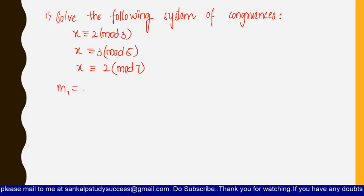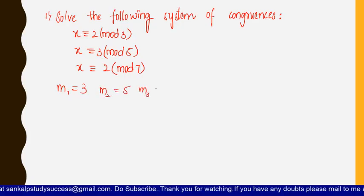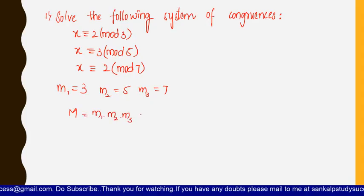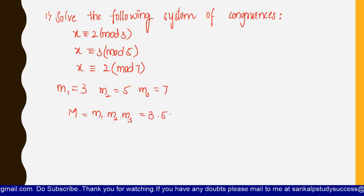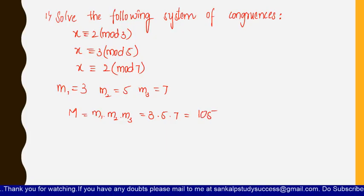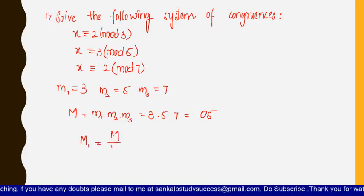We have three equations, so we have three values: m1 = 3, m2 = 5, and m3 = 7. Now let us find the value of capital M = m1 × m2 × m3 = 3 × 5 × 7. 3 × 5 is 15, and 15 × 7 is 105. So capital M = 105.